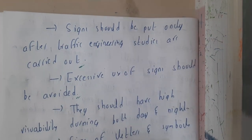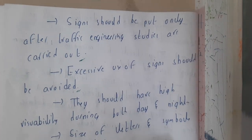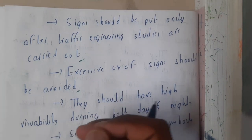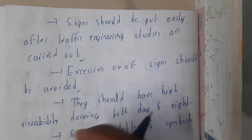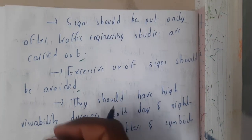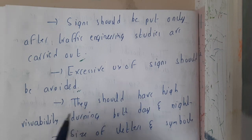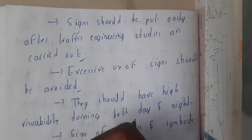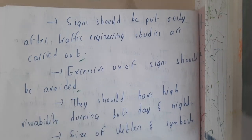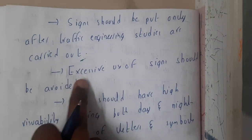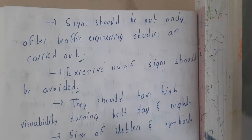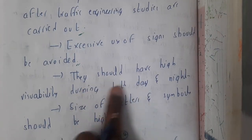Similarly, excessive use of traffic signs is also an issue. For example, if there are speed breakers every 100 meters, instead of placing a sign every 100 meters you can place one sign and below it write 'every 100 meters.' So excessive sign usage is not at all good.